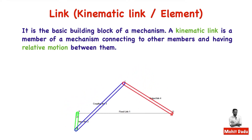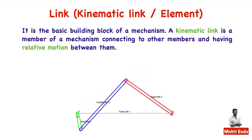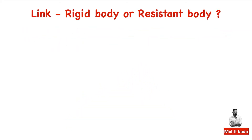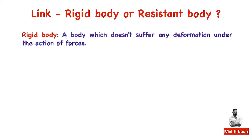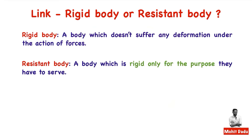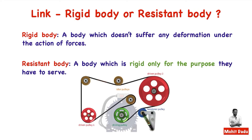Before classifying links, we need to understand what they are made of. A link is made up of a rigid body or a resistant body. A rigid body is a body which does not undergo any deformation under the action of forces. We have seen the four-bar mechanism where all links are rigid bodies, but it is not necessary for links to always be rigid bodies — they can also be resistant bodies.